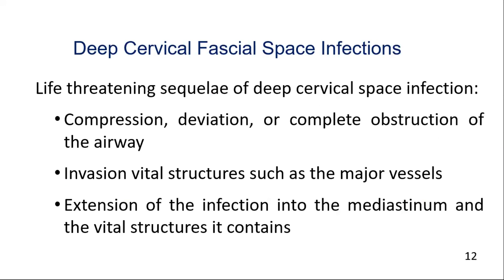The propagation of these primary facial spaces to the secondary or deep facial spaces of the neck is associated with significant morbidity and in some cases mortality, due to the significant potential for impending airway compromise. In addition to impingement on the airway, which is the most common life-threatening complication seen with deep neck space infections, these infections may also involve the vital structures of the neck such as the great vessels, carotid artery, and jugular vein, and may even communicate with the mediastinum.